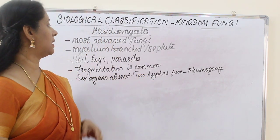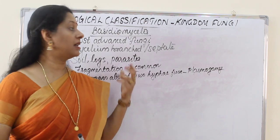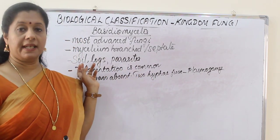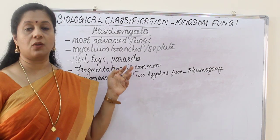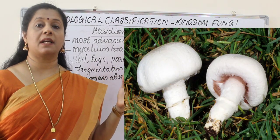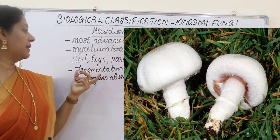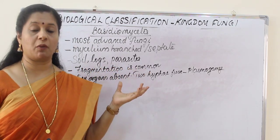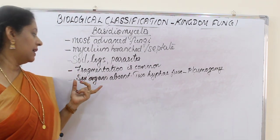Basidiomycetes is the most advanced type of fungi. The mycelium is branched and septate. They are found mostly in soil, on logs, and also as parasites. We are all familiar with mushrooms — these mushrooms also come under this group. Fragmentation is a very common means of vegetative propagation, whereas asexual spores are not usually seen.